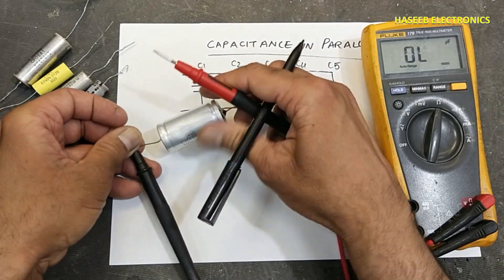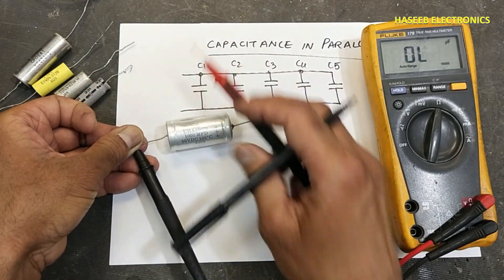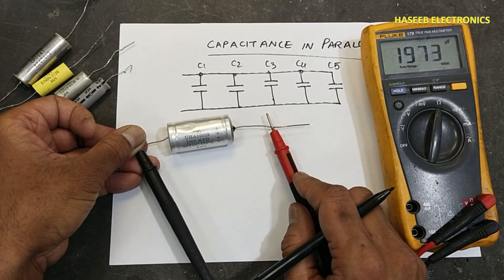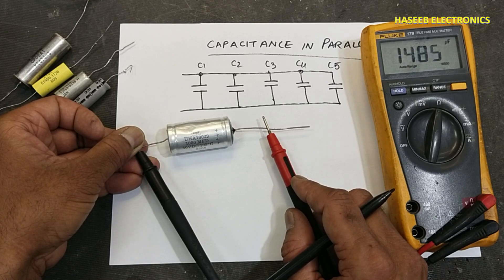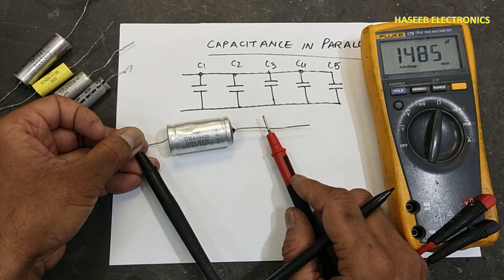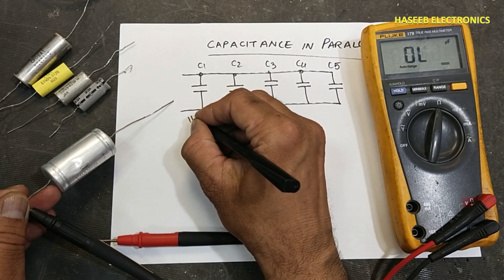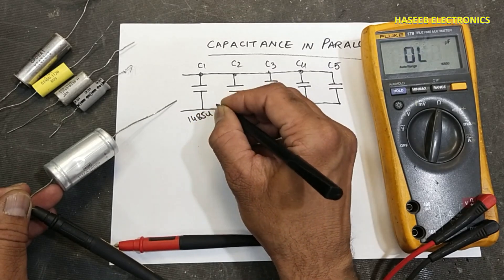On the capacitor it is 1000 microfarad, but the practical value is 1485 microfarad.